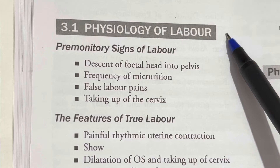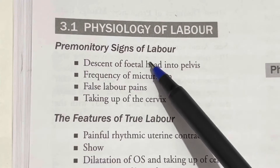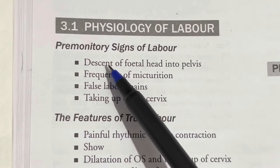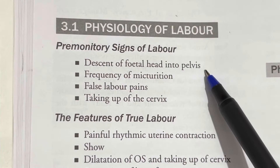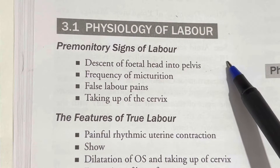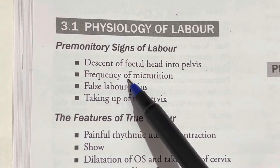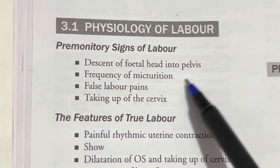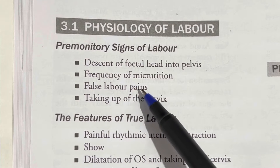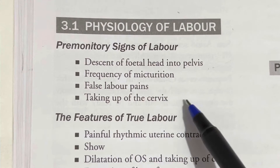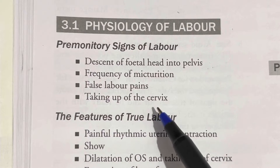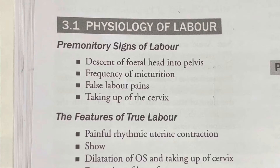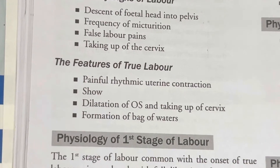So let's get started. First, let's look at the pre-monitory signs of labour. The first sign is descent of the fetal head into the pelvis. The second sign is frequency of micturition. Next is false labour pains, and the next is taking up of the cervix. These are all the pre-monitory signs of labour.